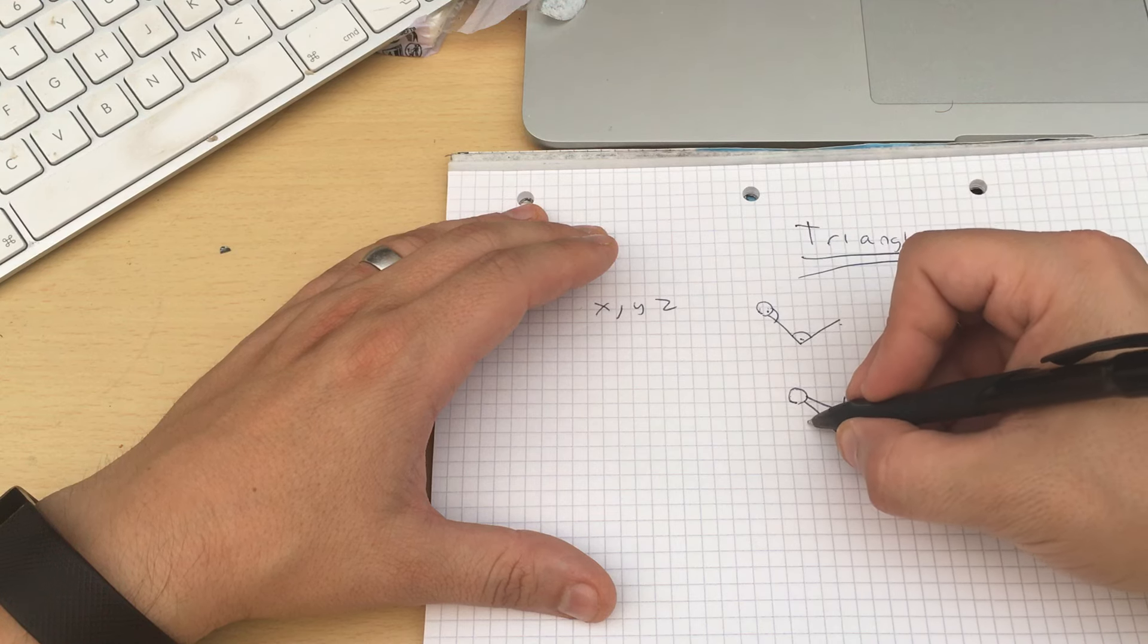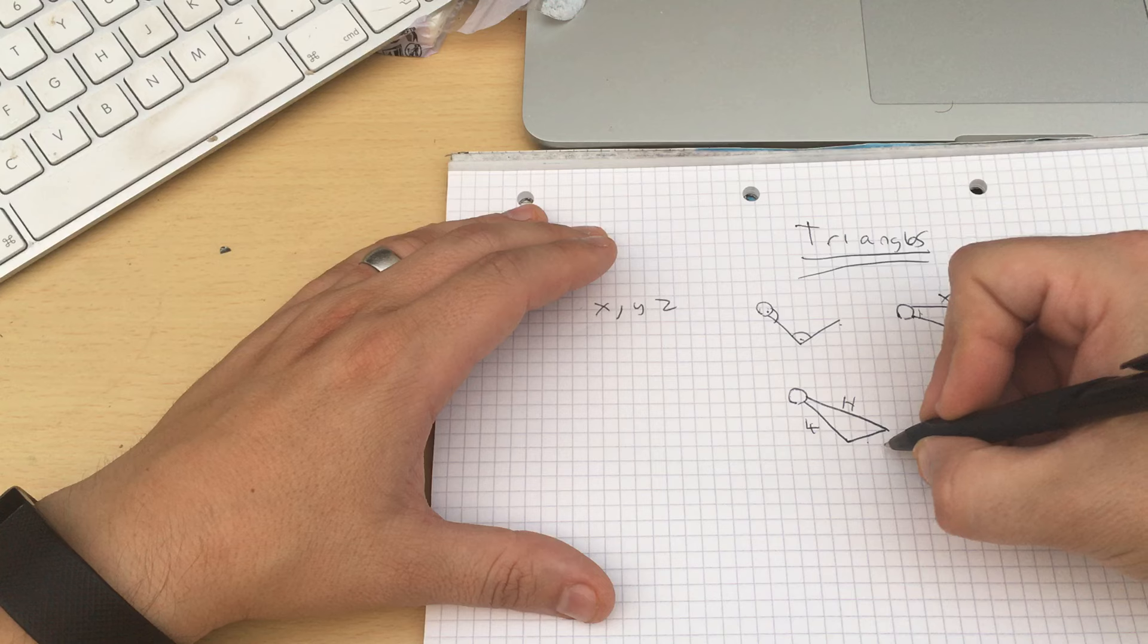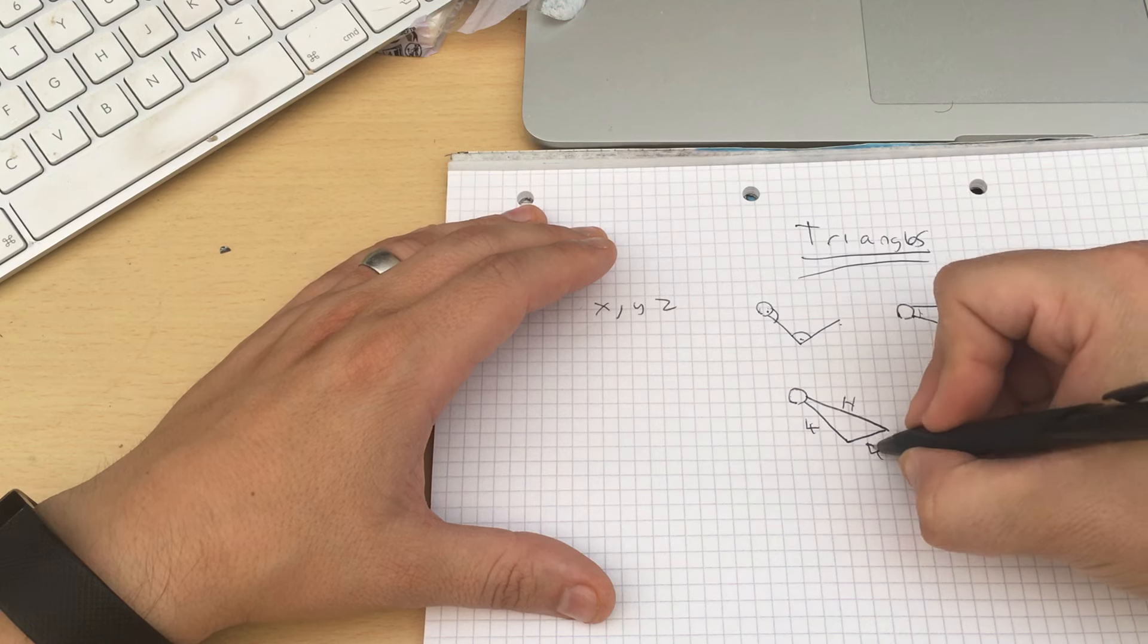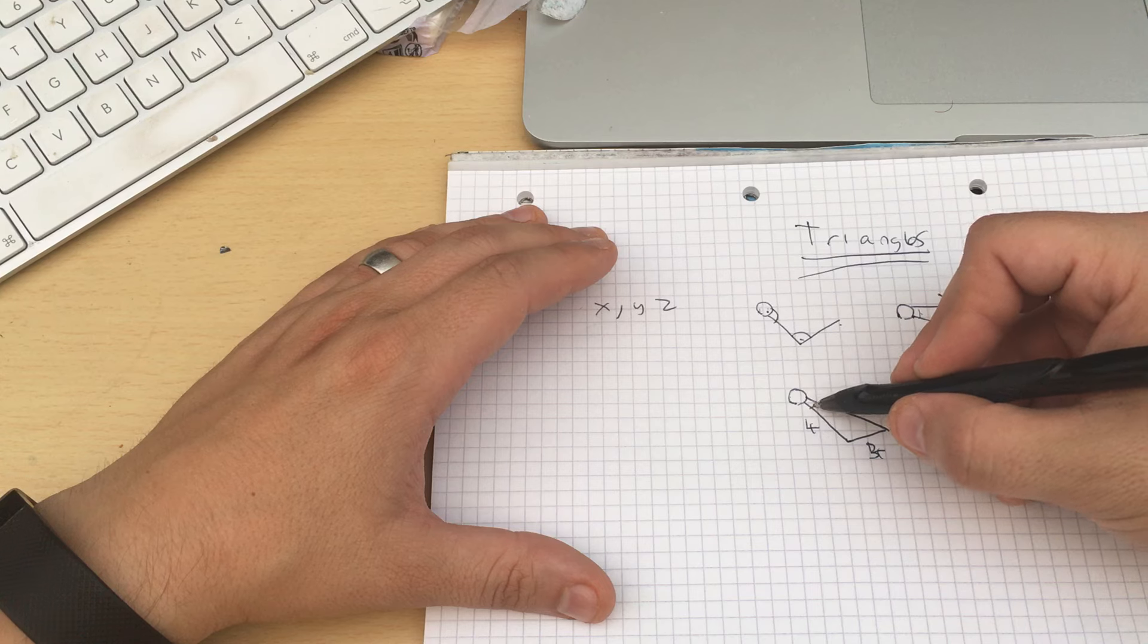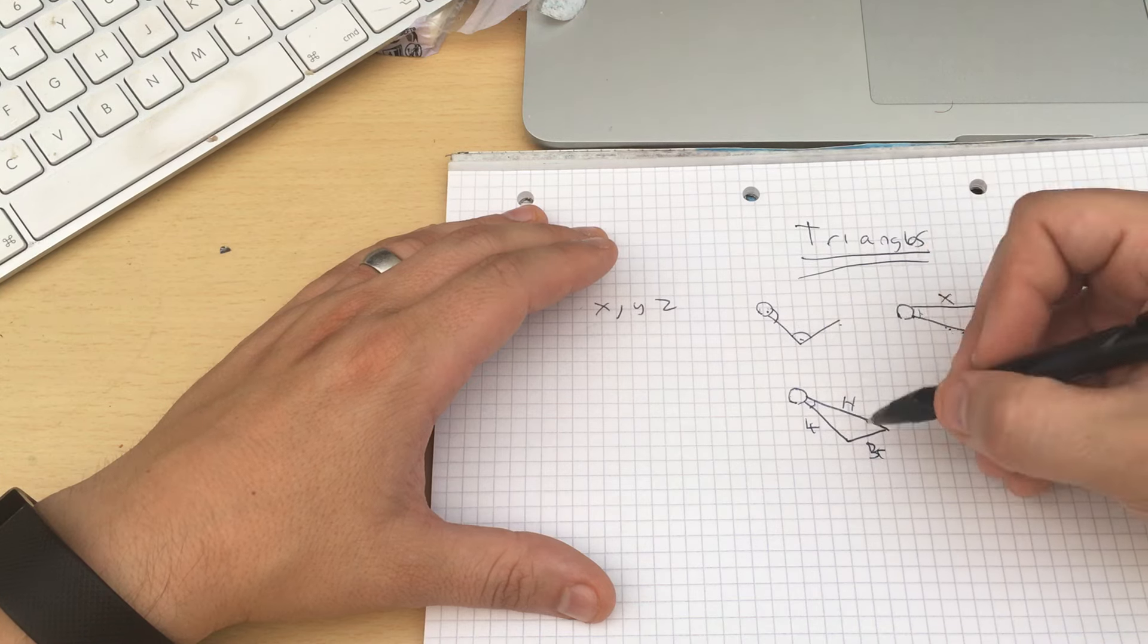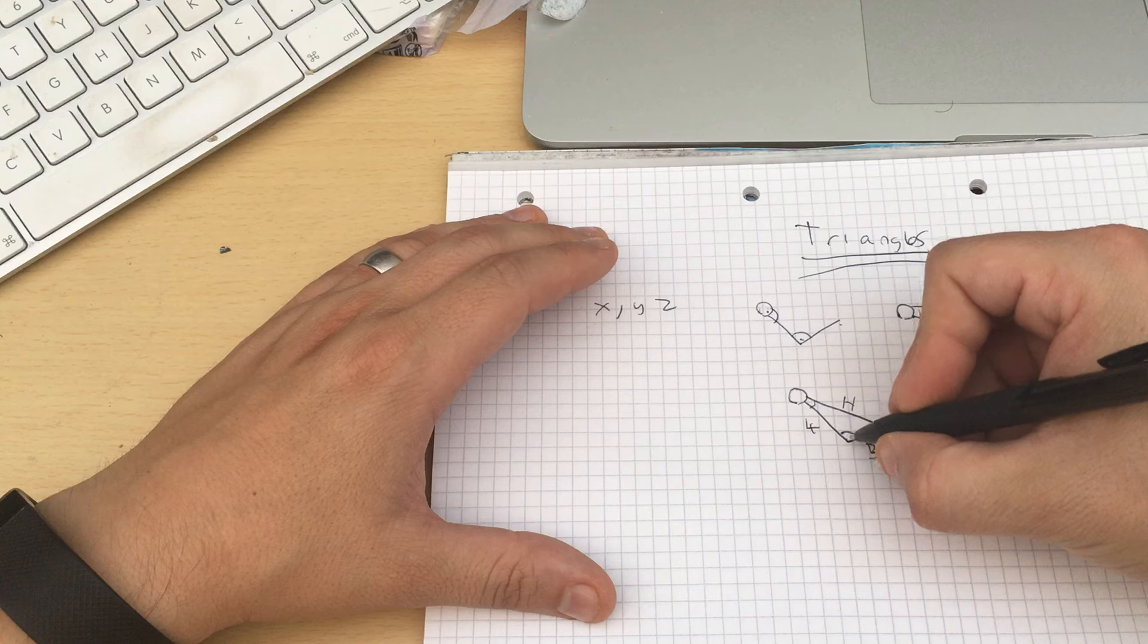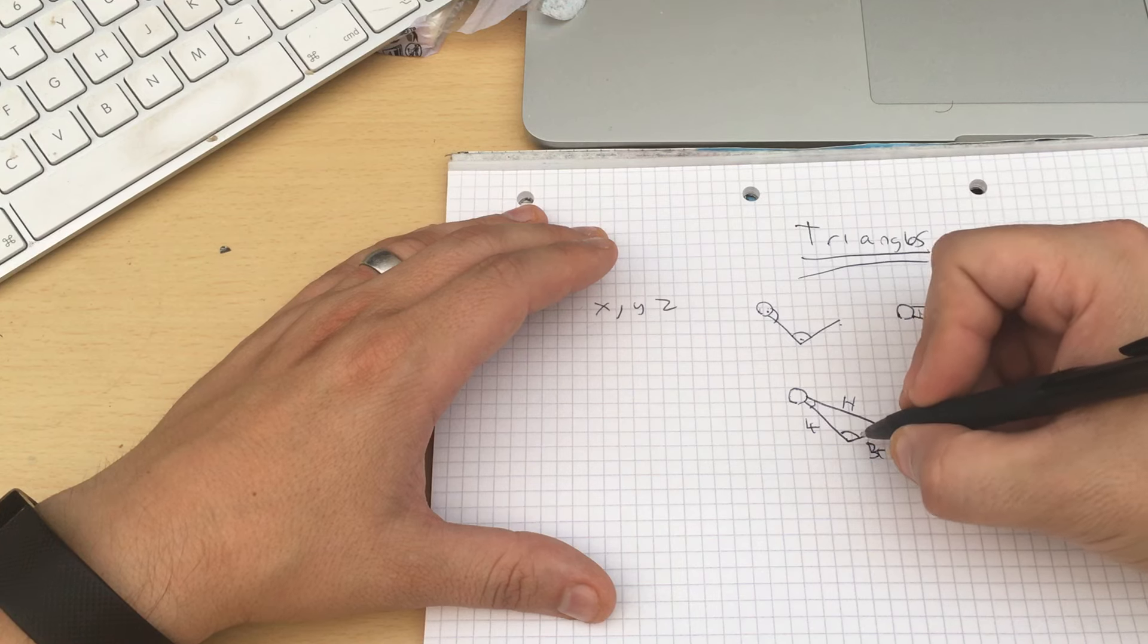Then you know that this is, say, for instance, four, and this is four long. Actually, it looks a little bit shorter. But anyway, you can work out what that angle needs to be, which is your shoulder joint. You can work out what this angle needs to be, which is your elbow joint.